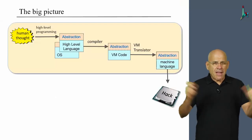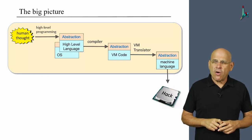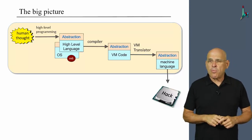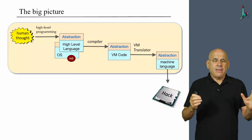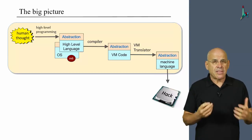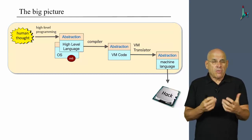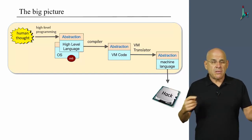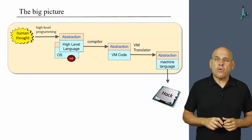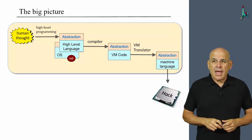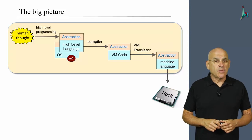To remind you, this is our big picture — the plan of our course. We are now right here in the operating system module. There's no way to write high-level programs without having some operating system support in the background. The goal of the operating system is to close many gaps that exist between your high-level programming and the bare-bone hardware on which your programs are supposed to execute.